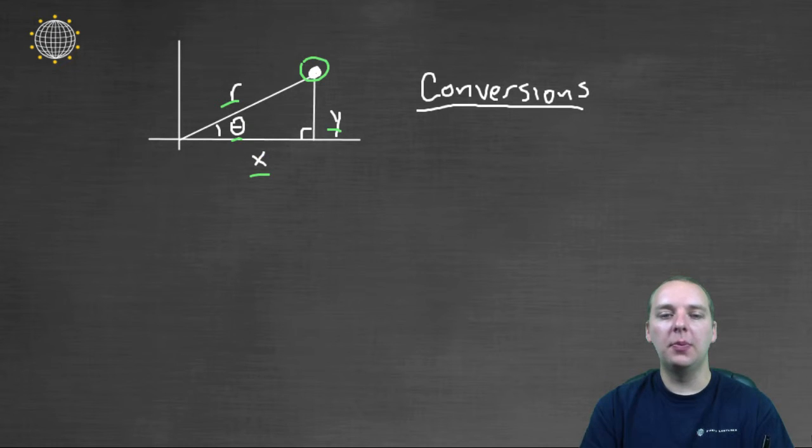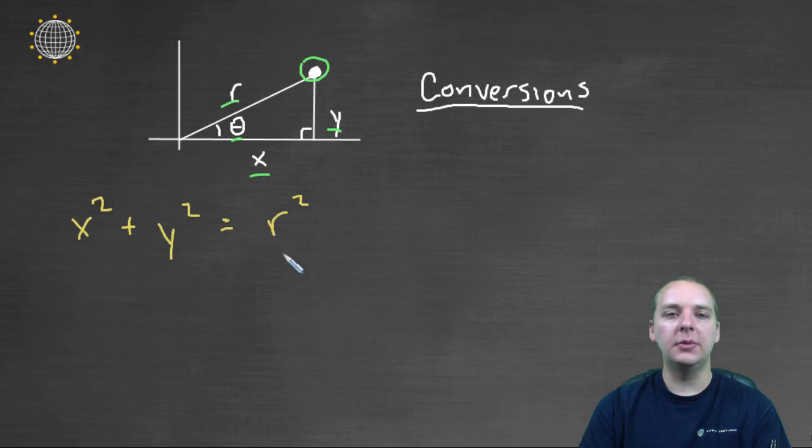For instance, here's a couple that jump out to me. I see a right triangle, and I see the three edges, and I automatically see that x squared plus y squared equals r squared. And so that's a great conversion. If you're given an x, y point, you can find the r using the Pythagorean theorem.